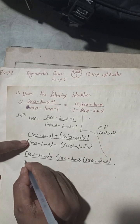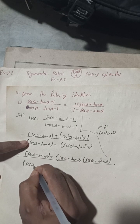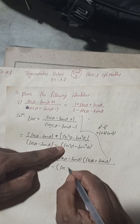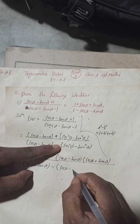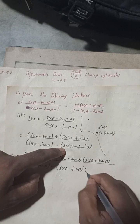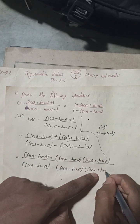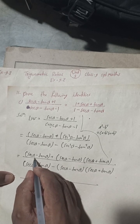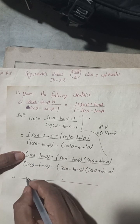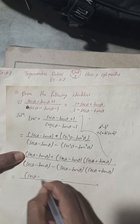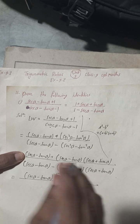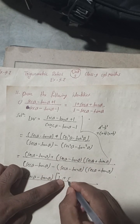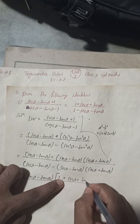Again there is sec α minus tan α, and sec²α minus tan²α becomes sec α minus tan α into sec α plus tan α. Now take sec α minus tan α common — outside the bracket there is 1 plus sec α plus tan α.